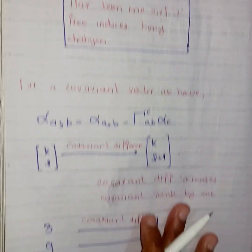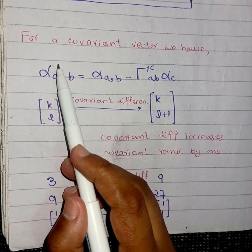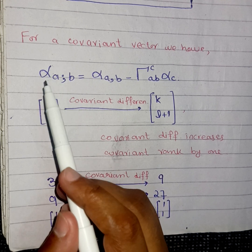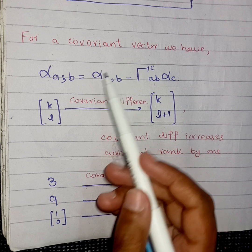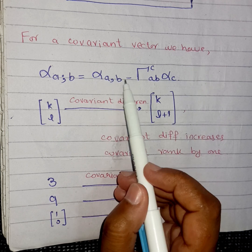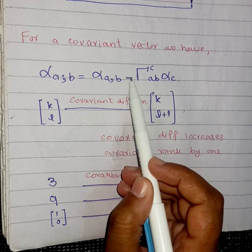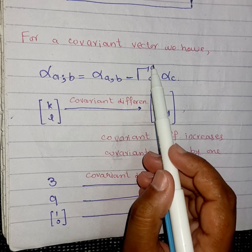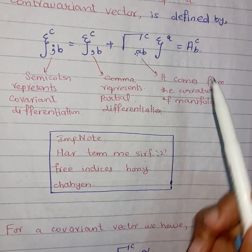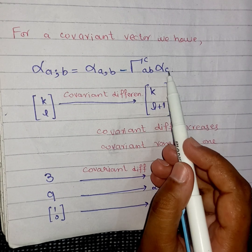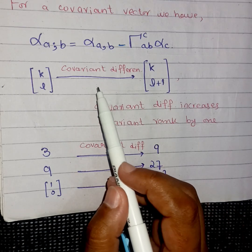For a covariant vector — previously I wrote Xi^c as a contravariant vector — the covariant differentiation of a covariant vector is represented as alpha_a semicolon b. The difference is that here we write a negative sign in the covariant derivative of a covariant vector, and I have replaced the dummy index, writing 'c' as the dummy index in these two places.